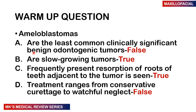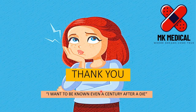Back to the warm-up question answers. A — ameloblastomas are the least common clinically significant benign odontogenic tumors: that is FALSE, they are actually one of the most significant. B — they are slow-growing tumors: TRUE. C — they frequently present with resorption of roots of adjacent teeth: TRUE. D — treatment ranges from conservative curettage to watchful neglect: FALSE. Treatment involves enucleation or marsupialization, though with high recurrence risk, so resection is generally preferred. I hope you learned a lot. Subscribe, hit the bell notification, and I'll see you in the next video. Tell a friend — to Zambia and beyond. My name is Dr. Moses Kazewu. Until next time.